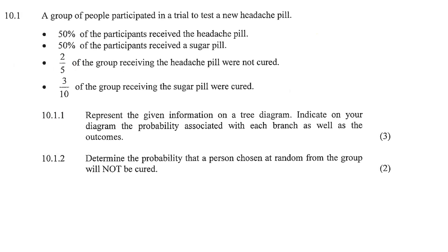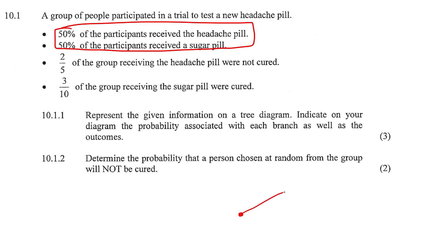When you do a tree diagram, you just need to look for categories. So here's our first category. I'm going to make a little dot and draw two lines — this one will be the headache pill, these are people who received the headache pill, and then these are the people who received a sugar pill.